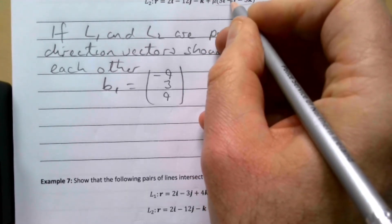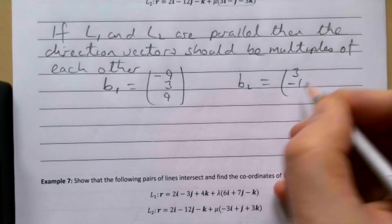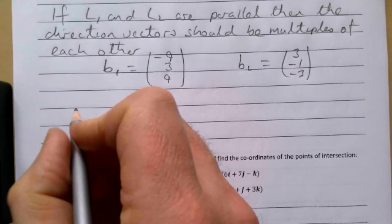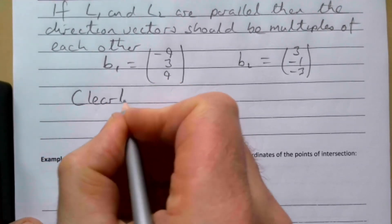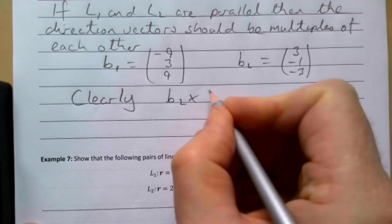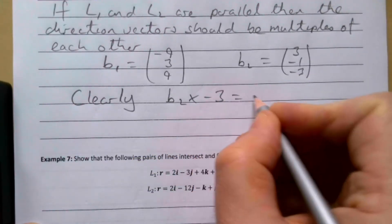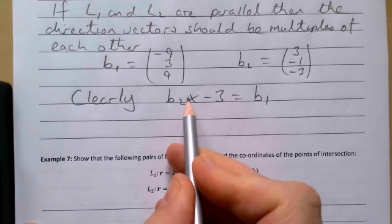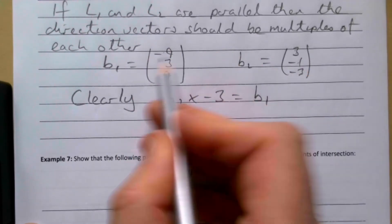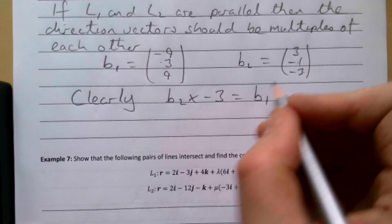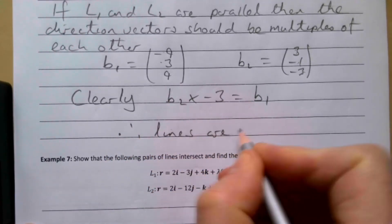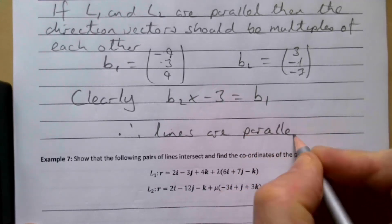b1 = (−9, 3, 9) and b2 = (3, −1, −3). We can see straight away that b2 × (−3) = b1: 3 × (−3) = −9, −1 × (−3) = 3, −3 × (−3) = 9. Since b2 multiplied by −3 gives b1, the lines are parallel.